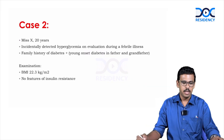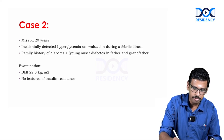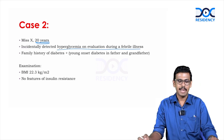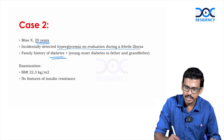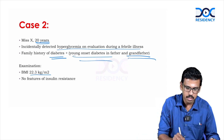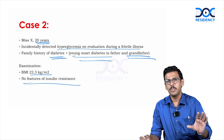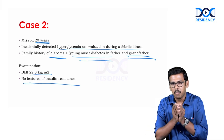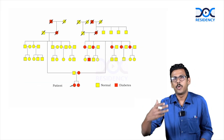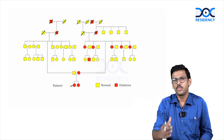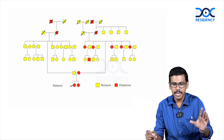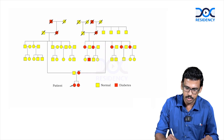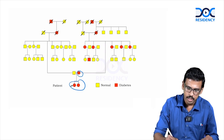Case 2: A 20-year-old female with incidentally detected hyperglycemia during a febrile illness, with a very strong family history of young onset diabetes in her father and grandfather. BMI is normal with no features of insulin resistance. With a multi-generational history of young onset diabetes, monogenic causes should be considered. MODY — maturity onset diabetes of the young — is the first monogenic diagnosis that comes to mind.